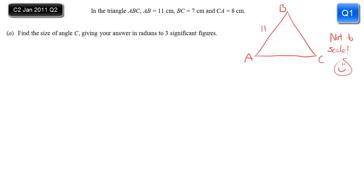Side AB is 11cm, side BC is 7cm, and side CA is 8, and it's angle C that we're after - so we're after this angle here. If we've got three sides and we want an angle, that's always the cosine rule.